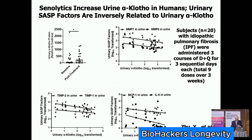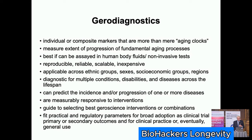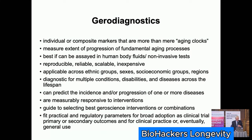This brings up gerodiagnostics. The best aging clock I have is a wall calendar and my birth certificate. But knowing biological age, which is distinct from chronological age, isn't enough as far as the FDA, EMA, and CLIA are concerned. What we need are things that change in response to interventions, tell us which intervention to use and when, and when the change predicts a change in clinical state. There are requirements that gerodiagnostics be applicable across ethnic groups, sexes, socioeconomic groups, and be reproducible, reliable, and scalable — a set of nine criteria. Overall it looks like composite scores looking at multiple fundamental aging processes may be the way to go.